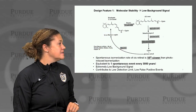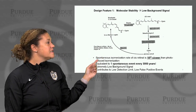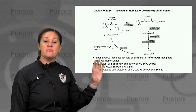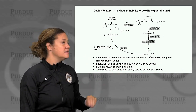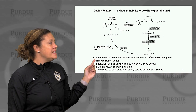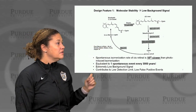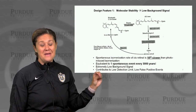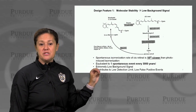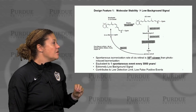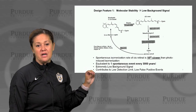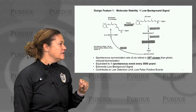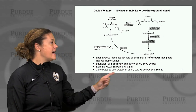This isomerization happens on the order of picoseconds. The key is that if there were a lot of spontaneous isomerization, we wouldn't be able to distinguish that from a photon event — it would contribute noise to the system. But here, our spontaneous isomerization rate of cis-retinal to trans is about 10^23 times slower than the photo-induced isomerization event. This results in an extremely low background noise and contributes to our ability to accurately detect a single photon event with low false positive events and a low detection limit.